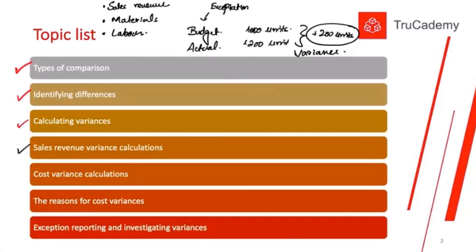After variance calculation, we will look at cost variance calculation. Most importantly, you should not only learn how to calculate a variance — the most important thing is to interpret your results. If there is a variance, whether good or bad, you should be able to interpret it and explain the potential reasons for it. Last but not least, exception reporting. This is all we will discuss in Chapter 5.